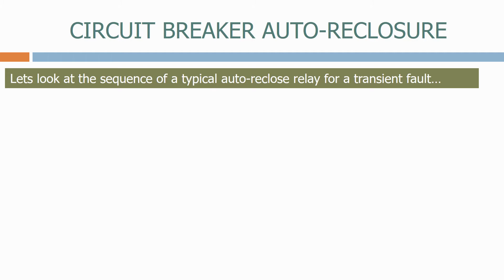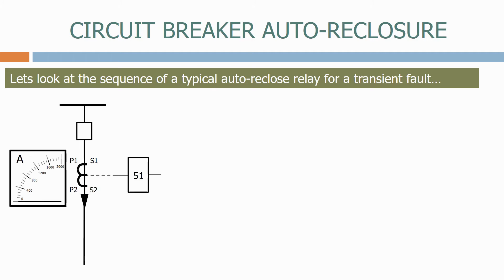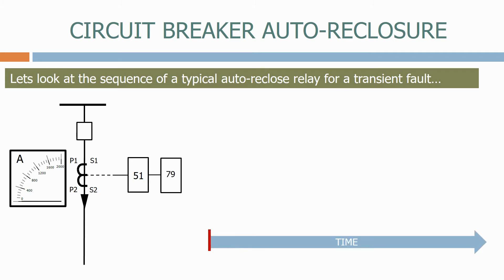Let's look at the sequence of a typical auto reclose relay from a transient fault. Here's a typical feeder circuit. As we said previously, the auto reclose relay normally uses the same current transformers as the protection system.